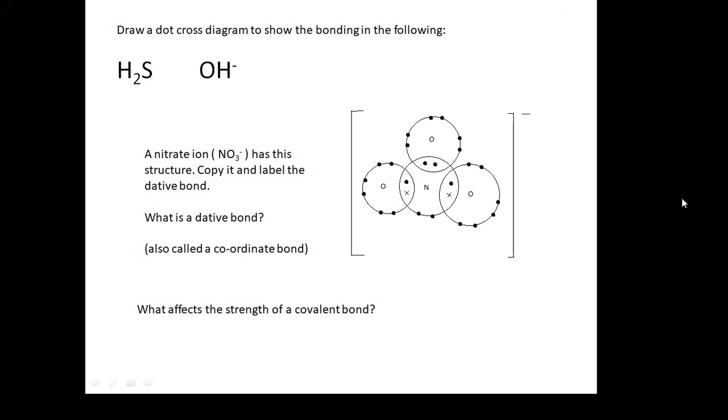Here are some questions for you to have a go at. If you're in my class, this would be a homework. So draw a dot and cross diagram to show the bonding in the following: H2S and OH-. A nitrate ion NO3- has this structure. And included in there is a dative bond. What is a dative bond? Also known as a coordinate bond. And then lastly, what affects the strength of a covalent bond? This isn't the end of the video because there's something else I want to talk about.